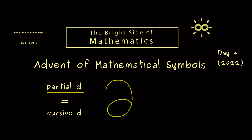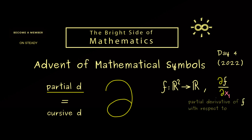We mostly use this symbol when we talk about partial derivatives. For example, if we have a function from R² to R, we can form the derivative with respect to the first variable. This is then the partial derivative denoted with the curve d. So we have df over dx₁. We simply say this is the partial derivative of f with respect to x₁. We use this curve d to distinguish the partial derivative from a normal derivative in one variable.